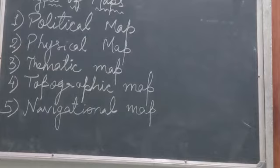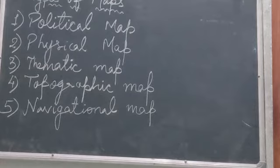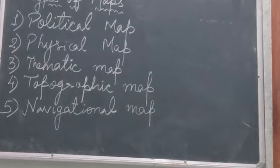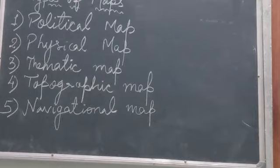The next one is about physical map. The map which describes the physical features like mountains, plains, rivers, plateaus, lakes etc. is a physical map. It tells us about the detailed picture of various landforms like mountains, plains, rivers, plateaus, lakes etc.